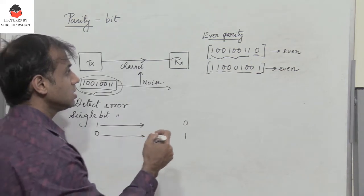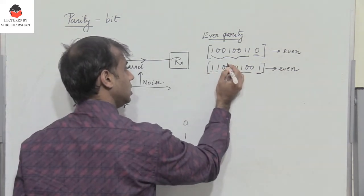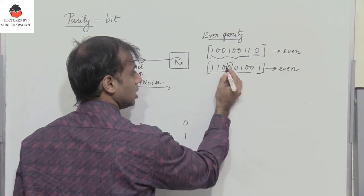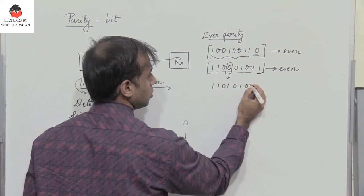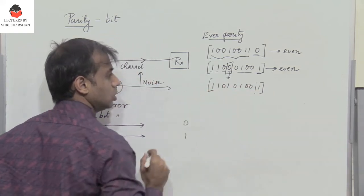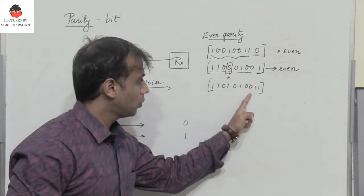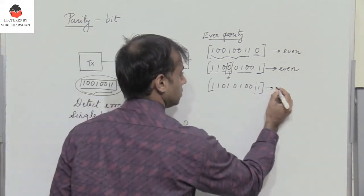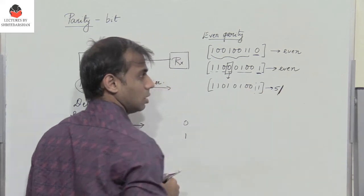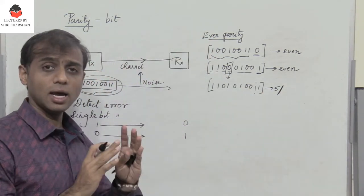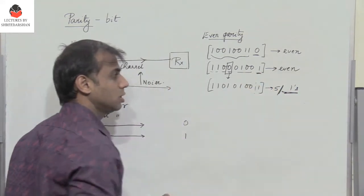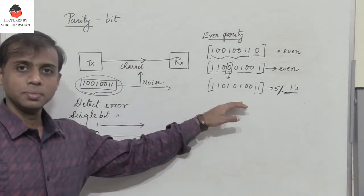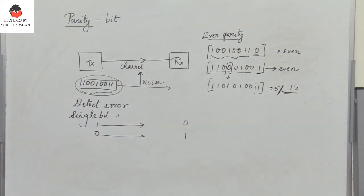If there is a single bit error, let us assume one bit changes — for example, a 0 changes to 1, giving 11010101. At the receiving end, we count the number of 1s and find 5, which is odd. But since we are using even parity, the number of 1s must be even. So at the receiving end we know there is an error, and the data can be retransmitted.